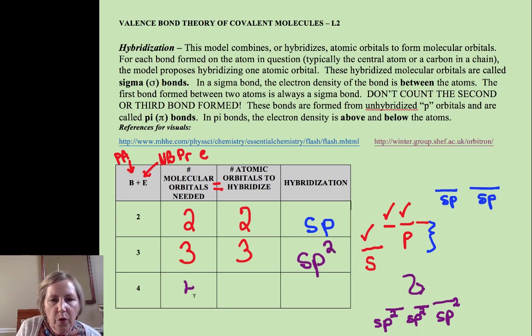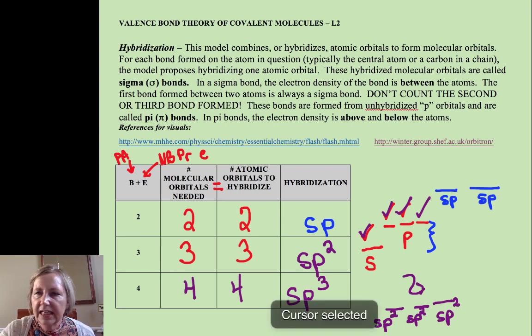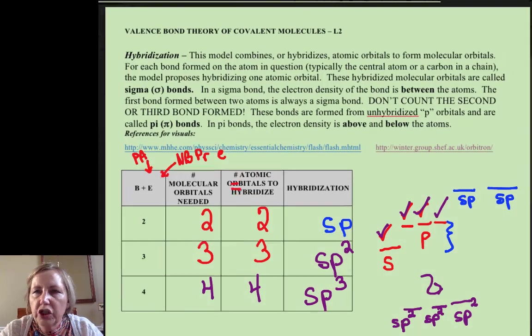Four and four, now we'll need an S, a P, and a P, and a P. We need all three, so it would be SP3 hybridized.